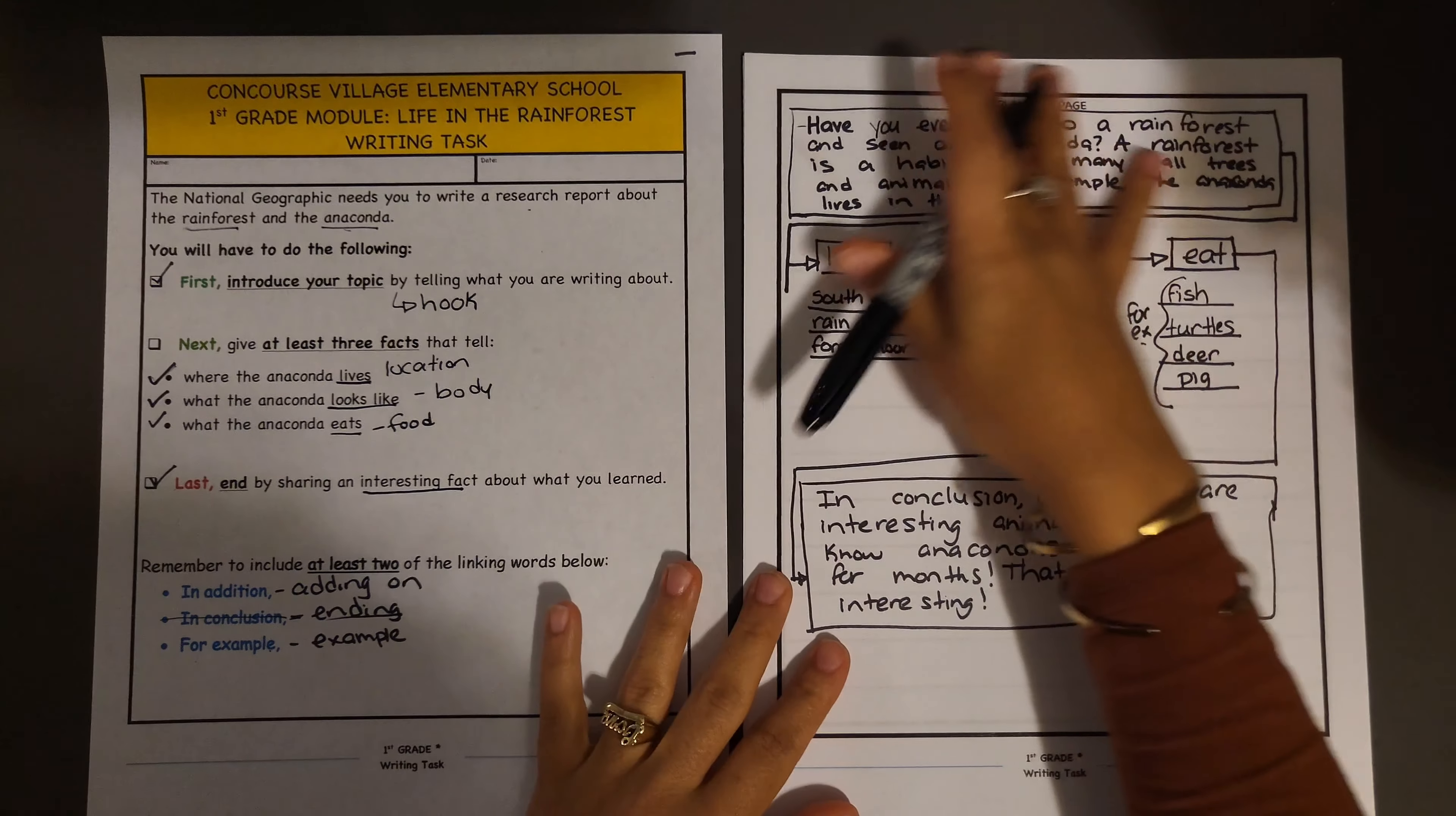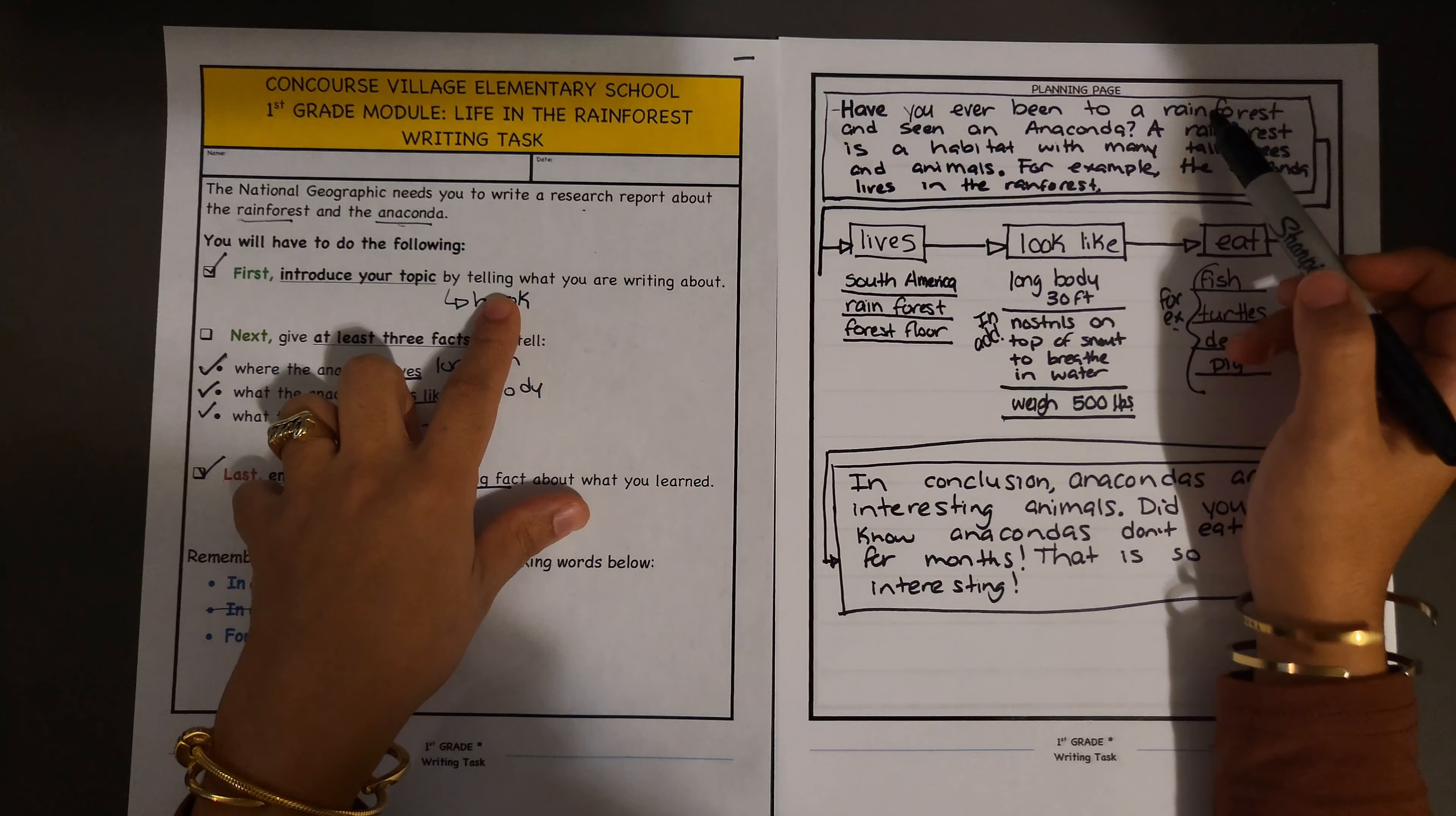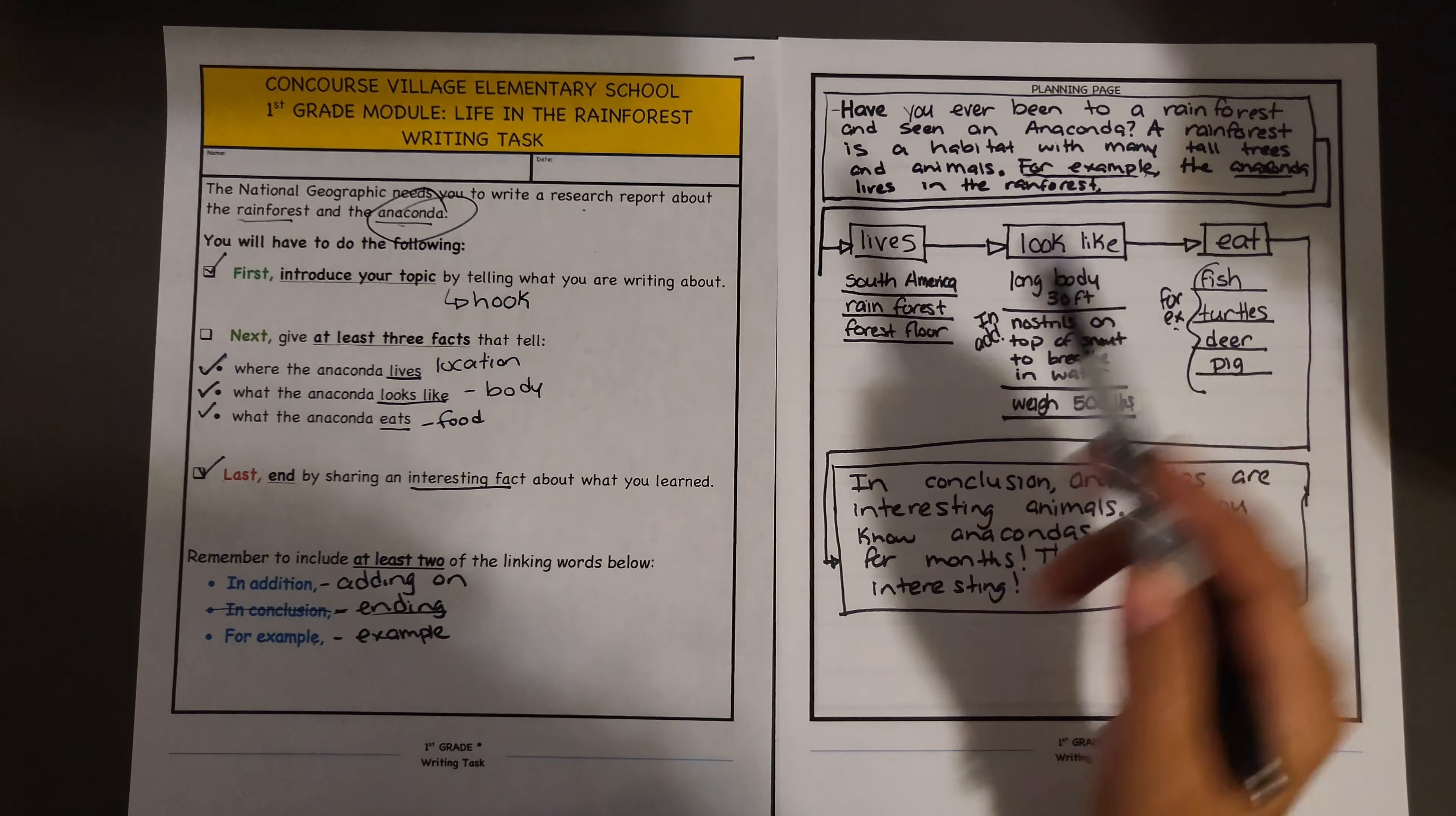Hey guys, it's time to use our plan to create our writing. Let me quickly check: do I have an introduction and a hook? 'Have you ever been to a rainforest and seen an anaconda?' Question mark. Then I'm telling something about the topic, which is the rainforest. 'A rainforest is a habitat with many tall trees and animals. For example, the anaconda lives in the rainforest.' The anaconda is the animal I'm writing about, which is why I included it here. I already included the linking word 'for example' so I can check that off.